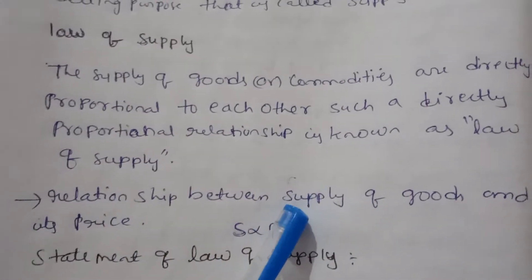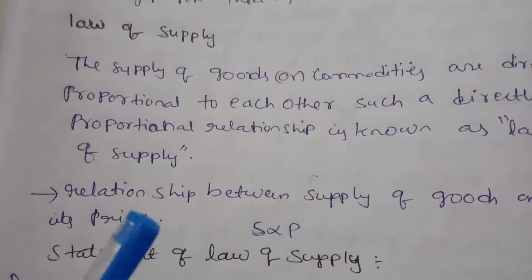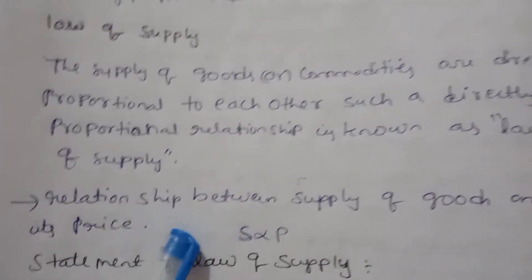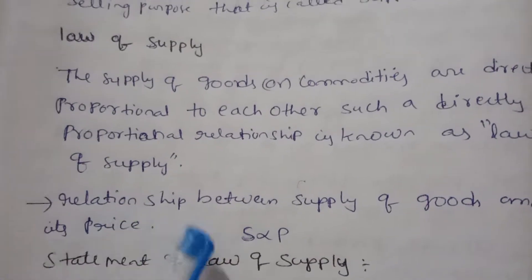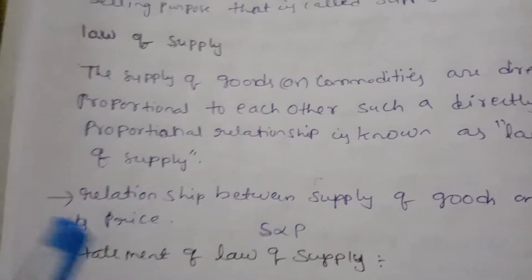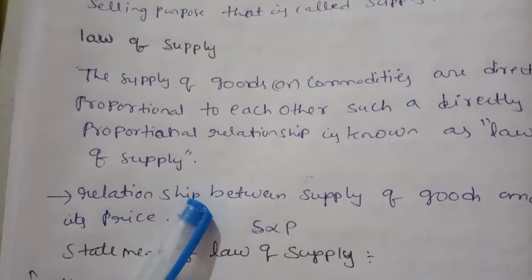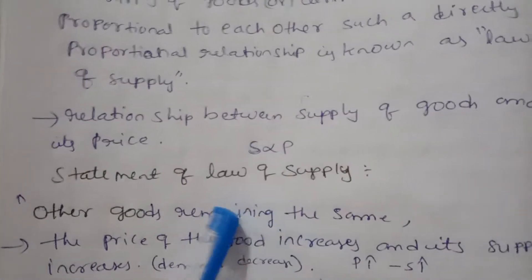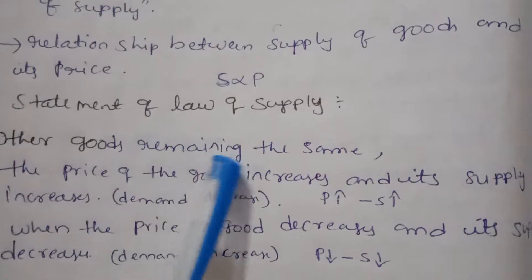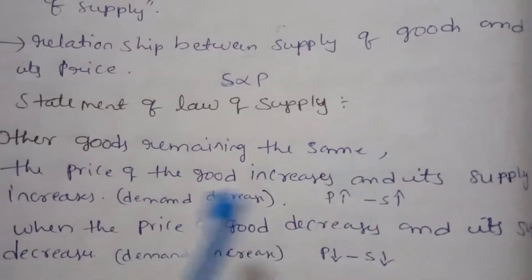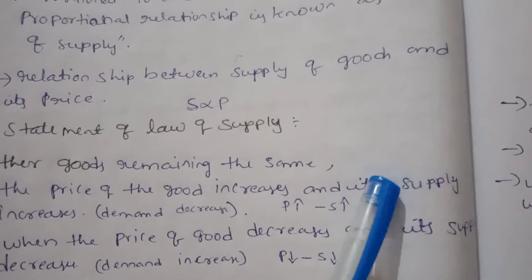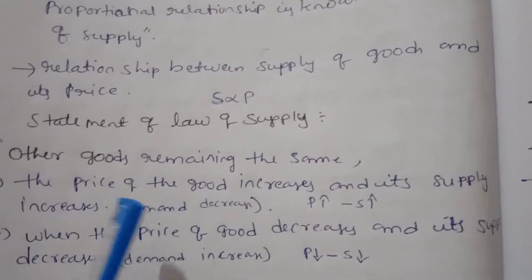Supply and price are equal to each other. Other things remaining the same, when the price of the goods increases, its supply also increases.